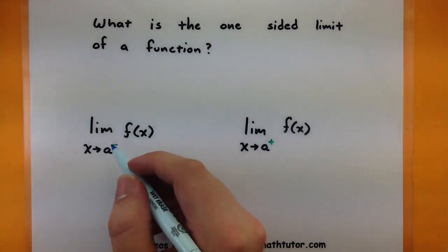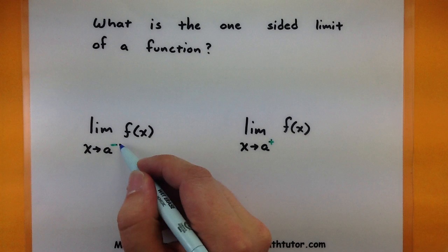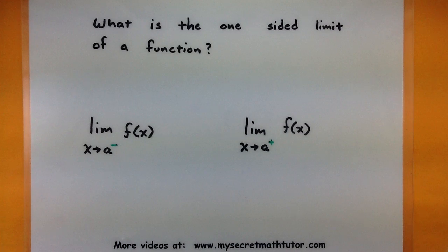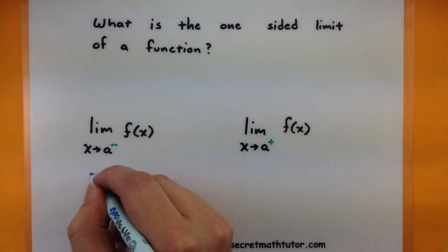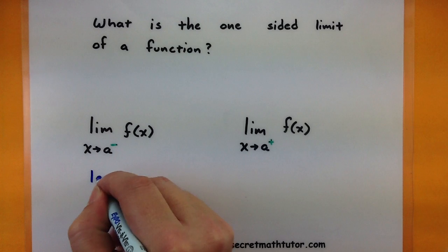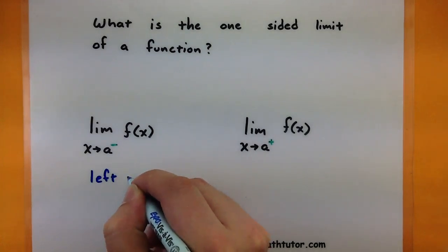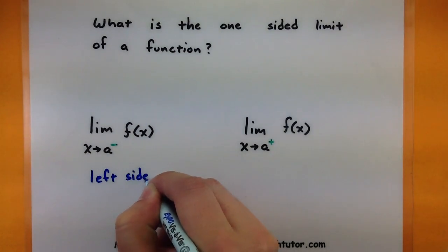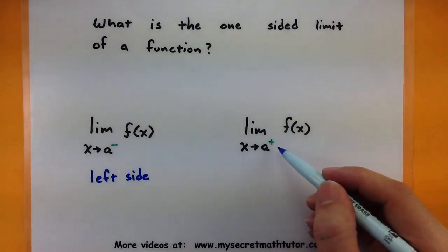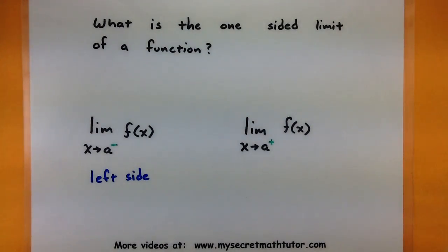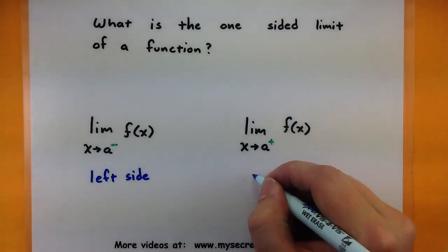In this first notation, you'll notice that there's a little minus sign next to the value that it's approaching — it almost looks like a power. That's your clue that x will be approaching the value of a, but we will be doing it from the left side. So this is a left-sided limit. In a similar fashion, if you put a little plus sign next to the value it's approaching, then you are approaching the values from the right side.